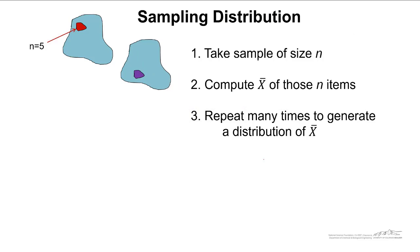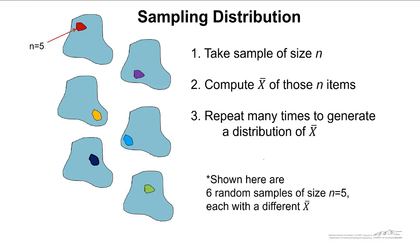We do this again. We have another sample of size n. We compute the average and keep going. And maybe we do this something like six times. But if you were to do this many, many times, you would come up with something known as a sampling distribution.